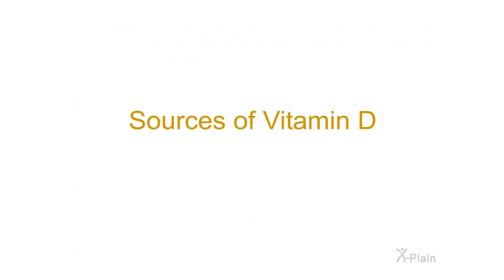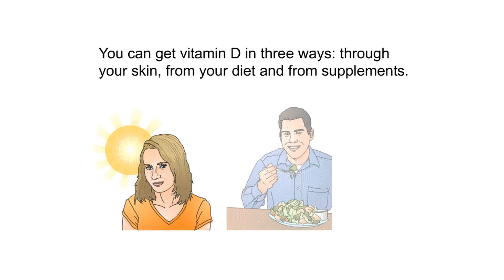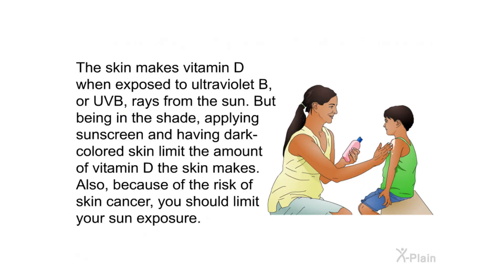You can get vitamin D in three ways: through your skin, from your diet, and from supplements. The skin makes vitamin D when exposed to ultraviolet B (UVB) rays from the sun. However, being in the shade, applying sunscreen, and having dark-colored skin limit the amount of vitamin D the skin makes. Because of the risk of skin cancer, you should limit your sun exposure.